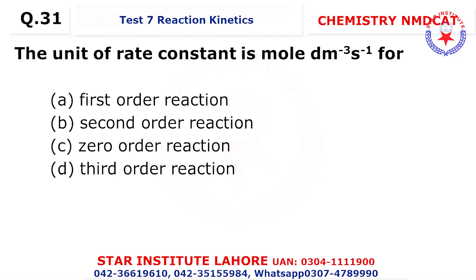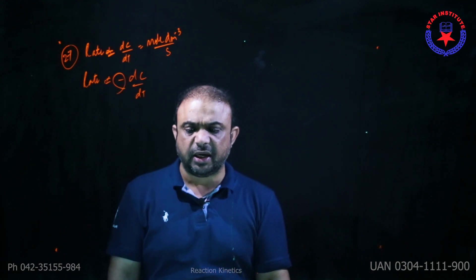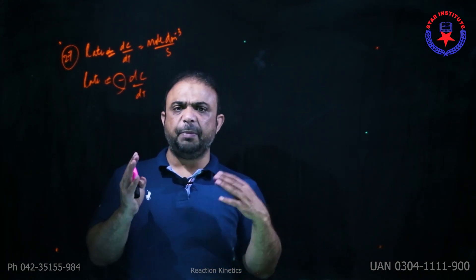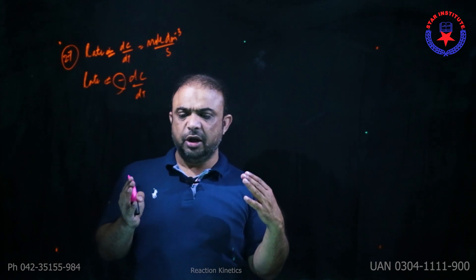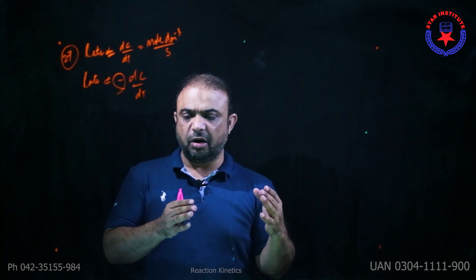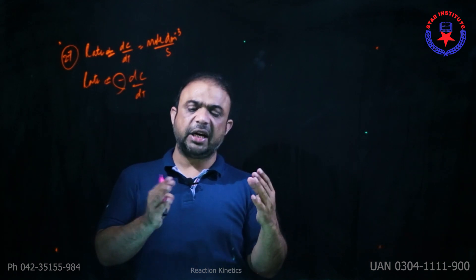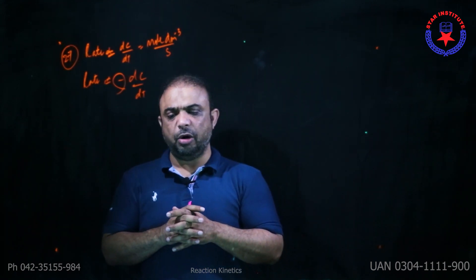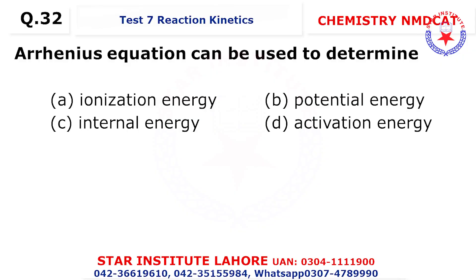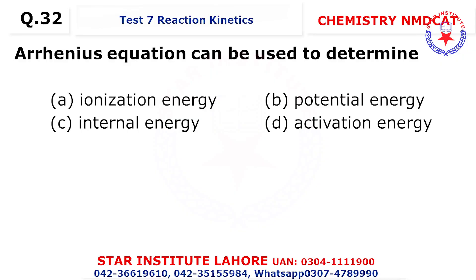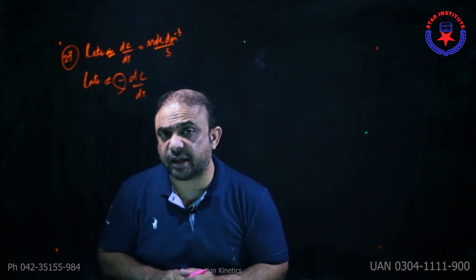Question 31: The unit of rate constant is moles per dm³ per second for a zero-order reaction. For first order it is per second; for second or third order, the units differ accordingly.